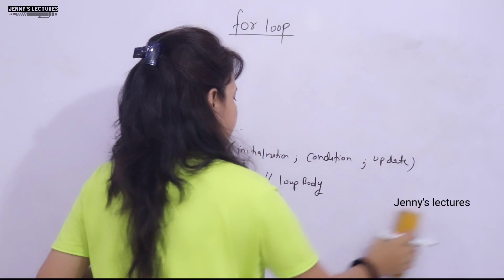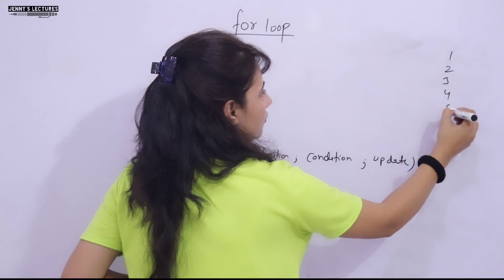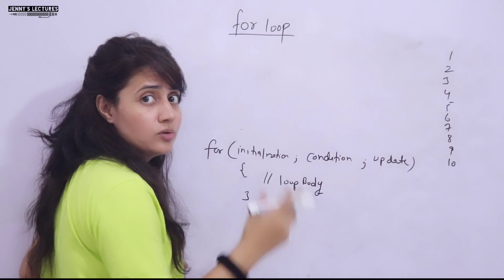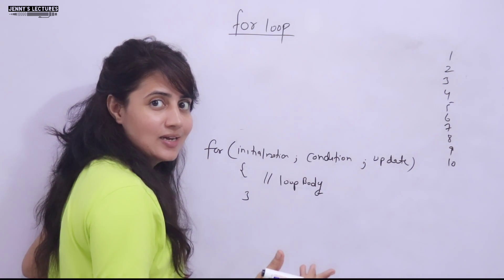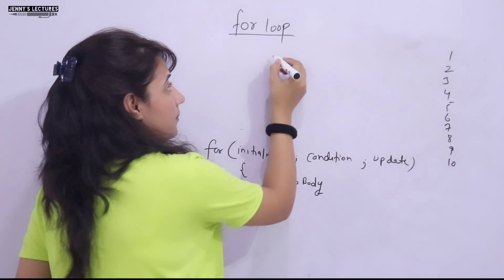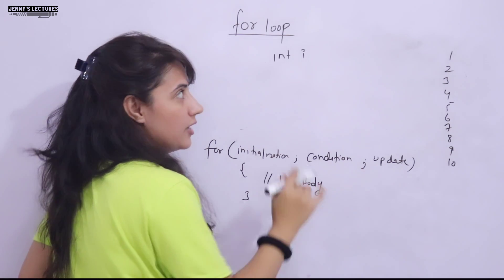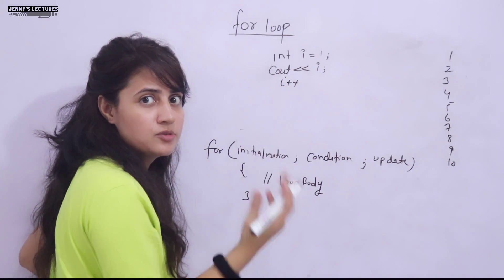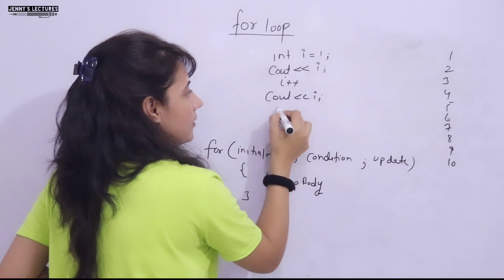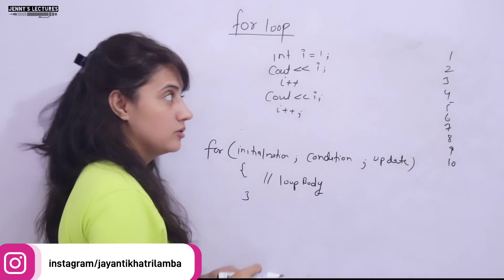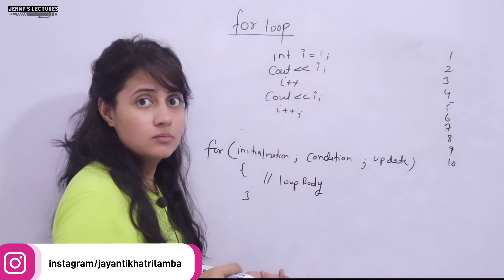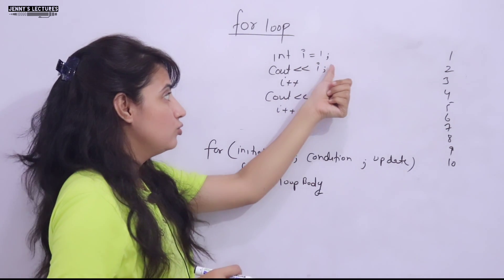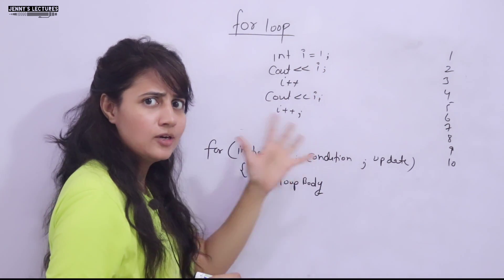We will print numbers from 1 to 10 — like 1, 2, 3, 4, 5, 6, 7, 8, 9, 10. One way without using a loop: you could write cout 1, cout 2, cout 3 — but that's not a good idea. Or you could take a variable like 'int i', initialize it to 1, then cout i, then i++, then cout i again, and so on — but you'd have to write those two lines again and again. To eliminate these repetitive statements, we use loops.